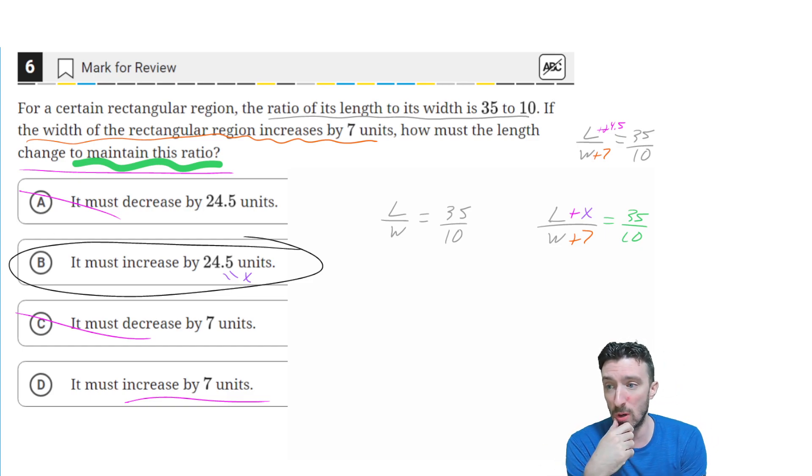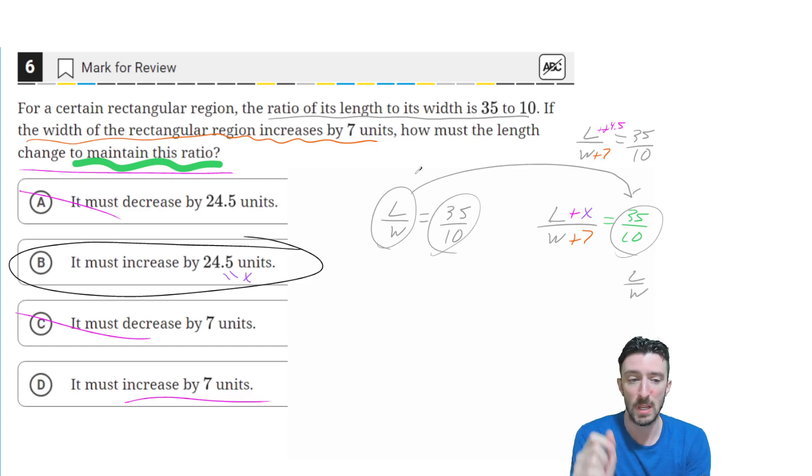Okay, so how would we confirm it? Well, if L over W is 35 over 10, where I see the 35 over 10 here, I could replace that with a L over W. So then I keep everything else the way it was over here, L plus x over W plus 7 equals L over W.